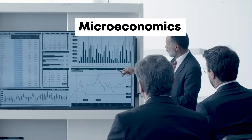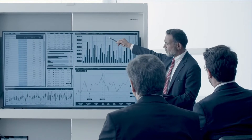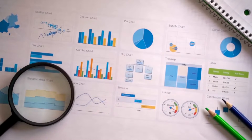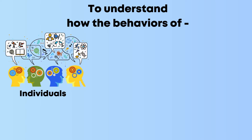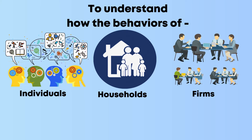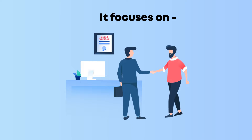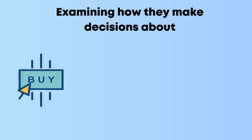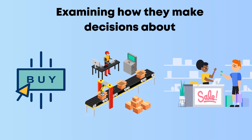Microeconomics is a discipline that takes a bottom-up approach, analyzing patterns from everyday life to understand how the behaviors of individuals, households, and firms influence markets. It focuses on the interactions between buyers and sellers, examining how they make decisions about what to buy, produce, and sell.